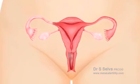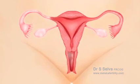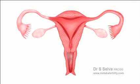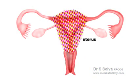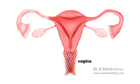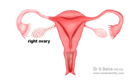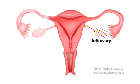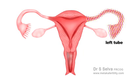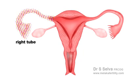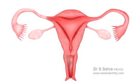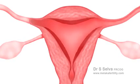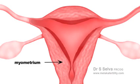This is a drawing of the normal female reproductive organs. This is the uterus. This is the vagina. This is the right ovary and this is the left ovary. This is the left tube and this is the right tube. This is the endometrium and this is the myometrium.